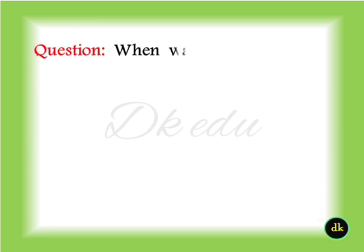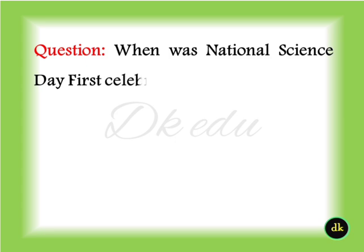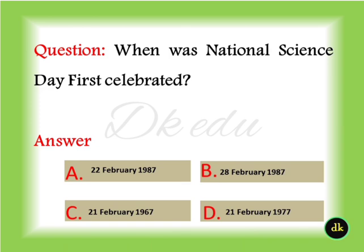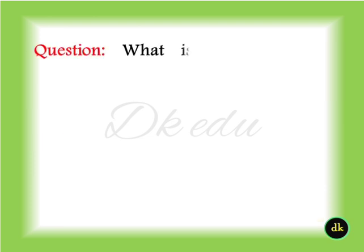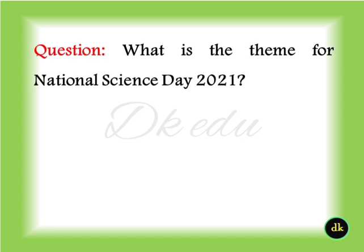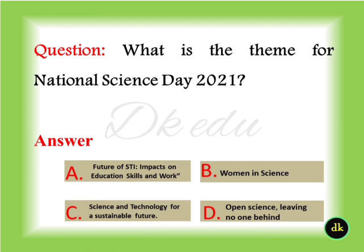When was National Science Day first celebrated? 28th February 1987. What is the theme for National Science Day 2021? Impact on Education, Skills and Work.